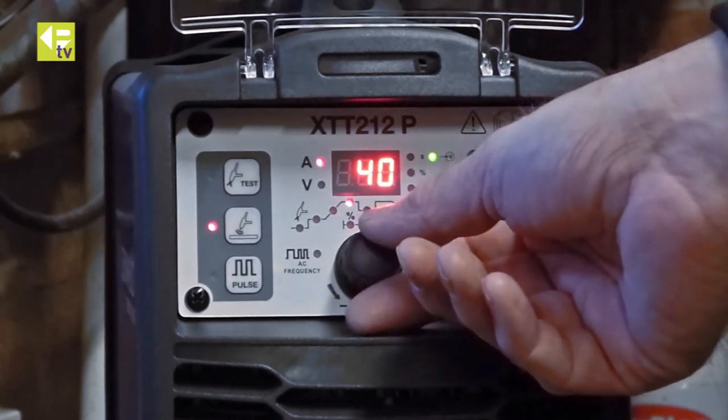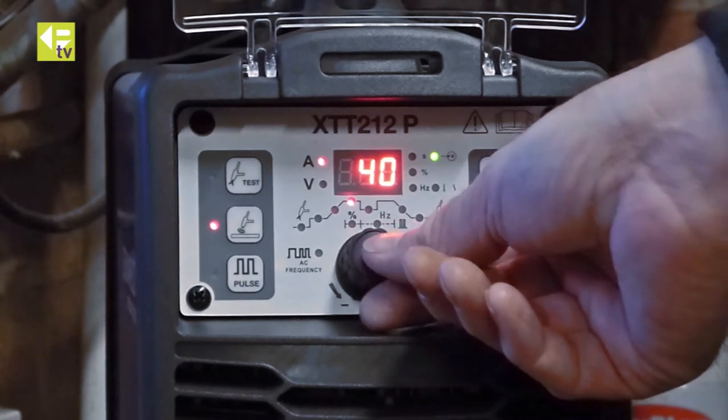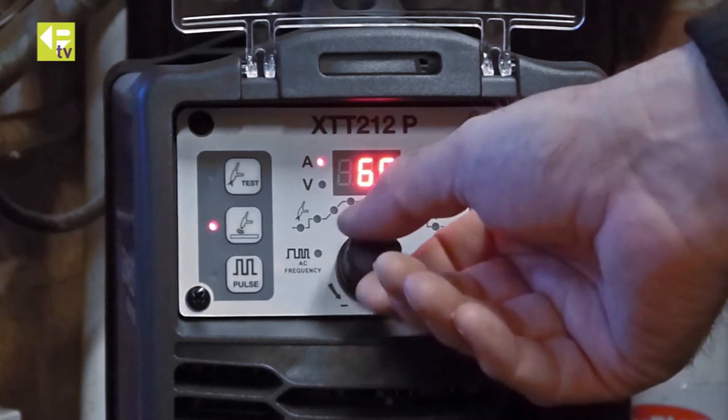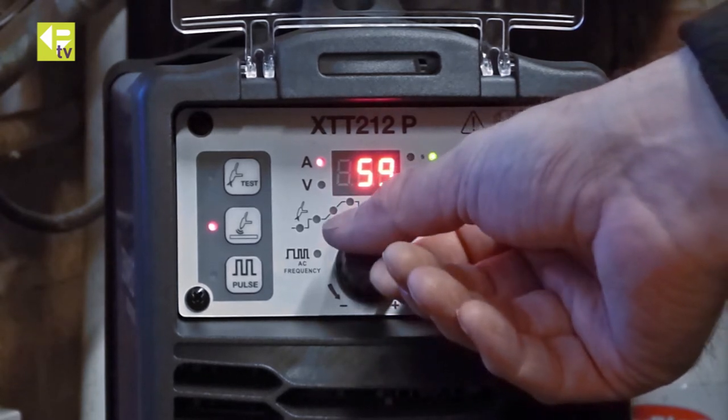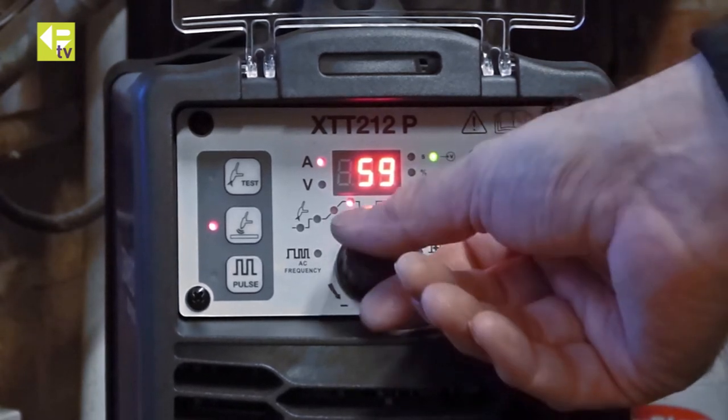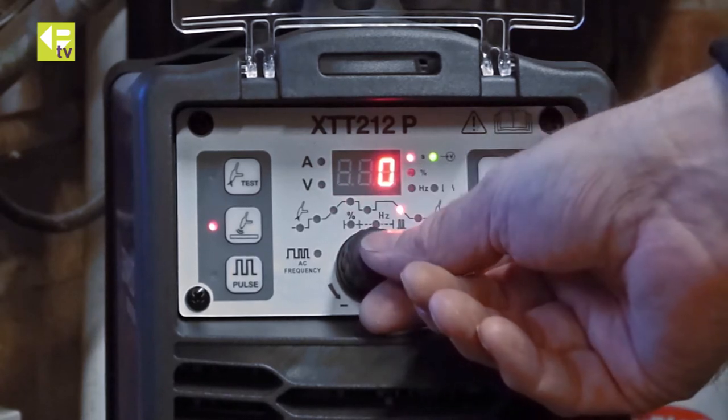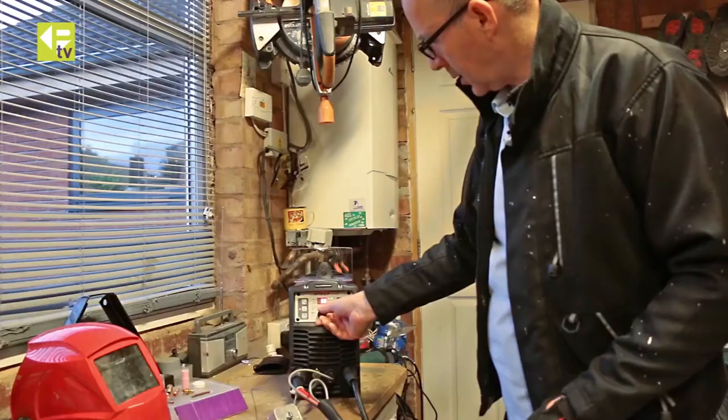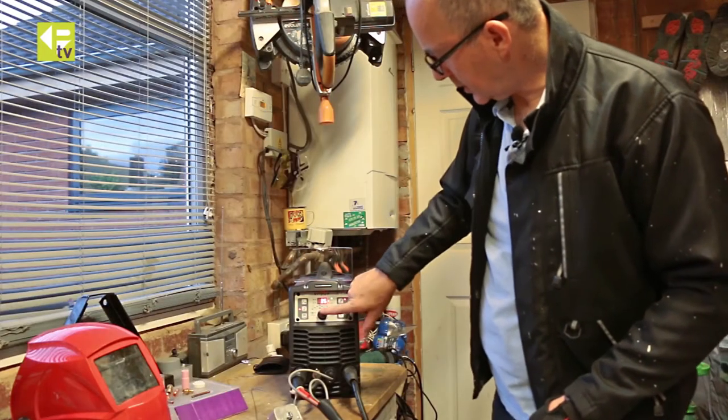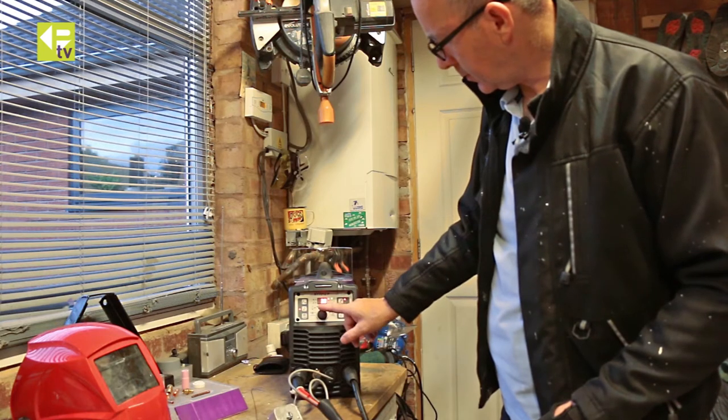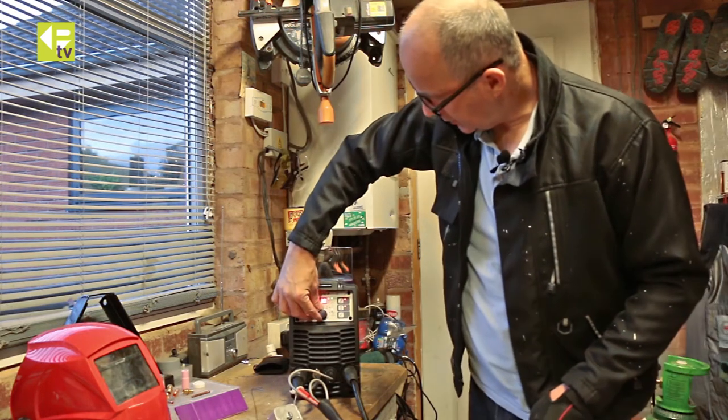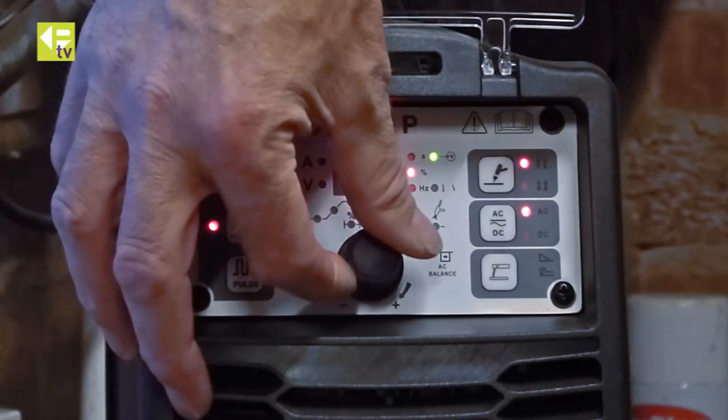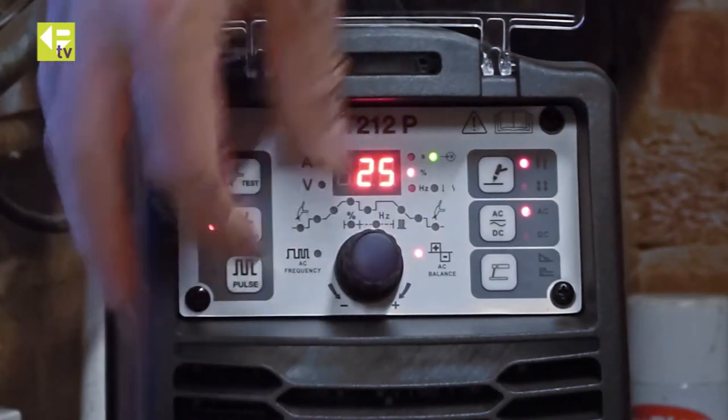Upslope 40 amps, we'll increase that to about 60. Downslope, won't bother with pulse. Gas again about three seconds. Additional features here: AC balance set to around 25% cleaning.